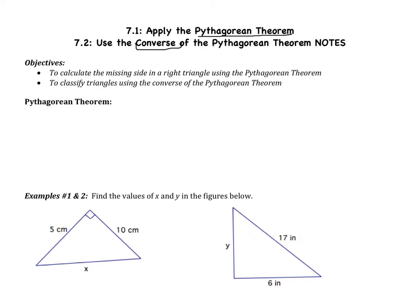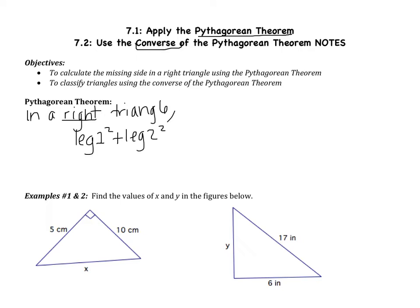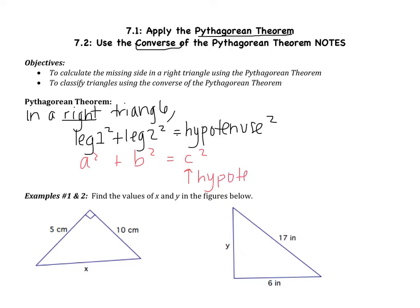The Pythagorean Theorem says: in a right triangle, leg 1 squared plus leg 2 squared is equal to the hypotenuse squared. The other way you've probably seen this is a squared plus b squared equals c squared, and what you have to remember is that c is the hypotenuse. It's really important that the Pythagorean Theorem only applies to right triangles — we only use it in right triangles.